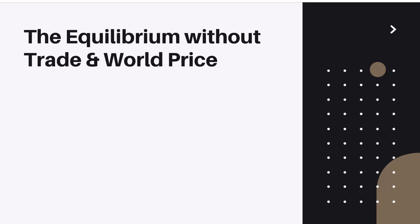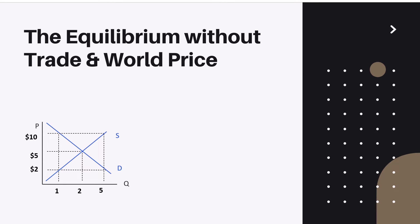Let us start with equilibrium without trade. So what we have here is our market in equilibrium with its total surplus, which consists of producer surplus and consumer surplus, and equilibrium price. Before proceeding to our next point, we should learn one concept which is world price.